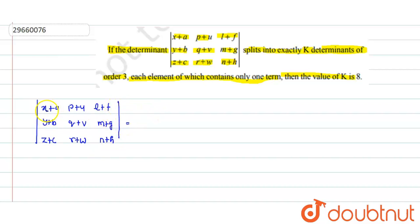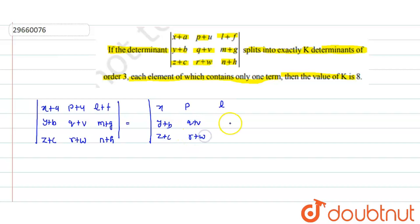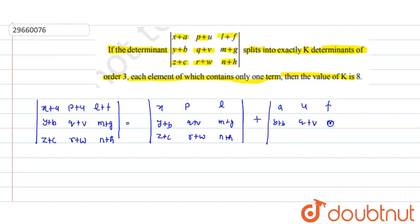So, I look at the determinant. We take x, y+b, z+c in one column, and p, l in others. Then q+v, r+w, m+g, and n+h. Plus, the next element contributes a, u, f. And the rows continue: y+b, q+v, m+g, then z+c, r+w, and n+h. This way the first row is split into two parts.